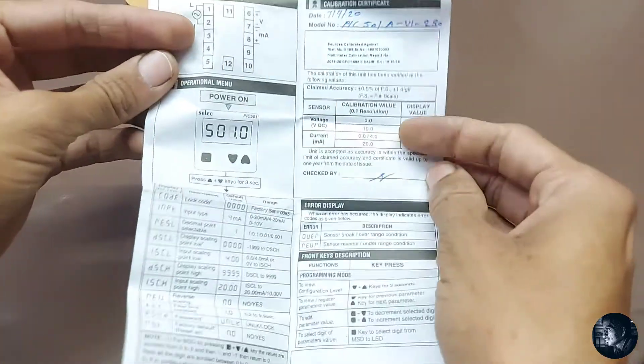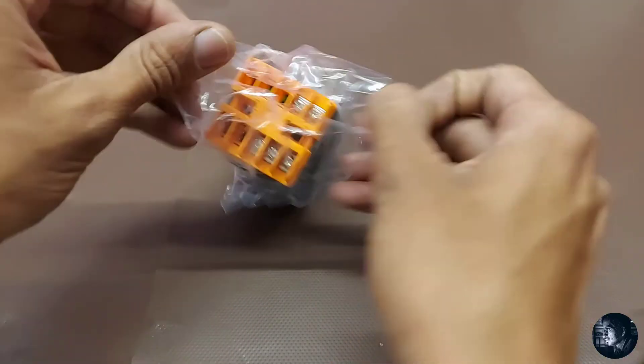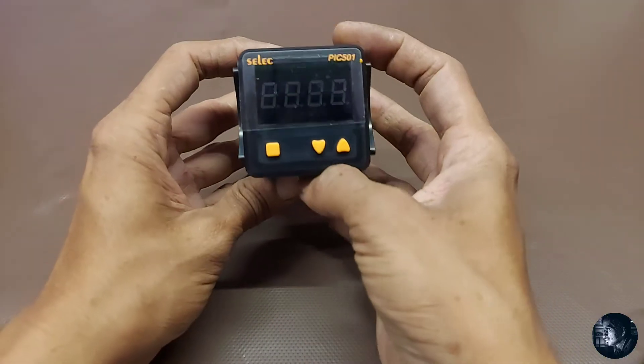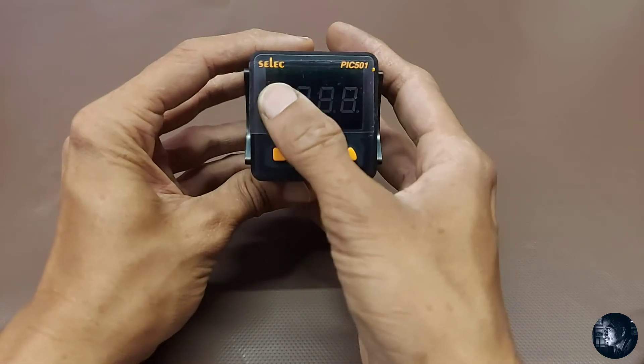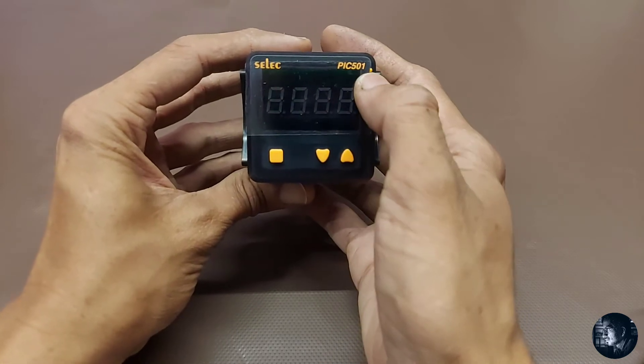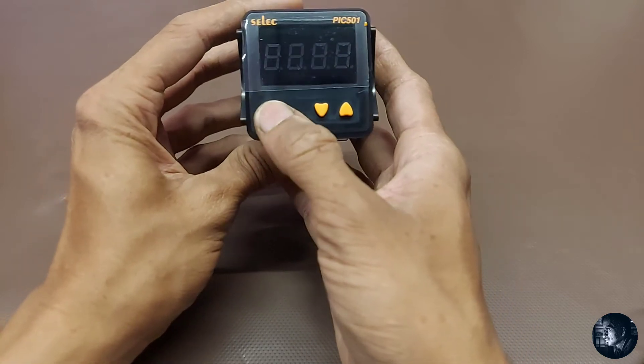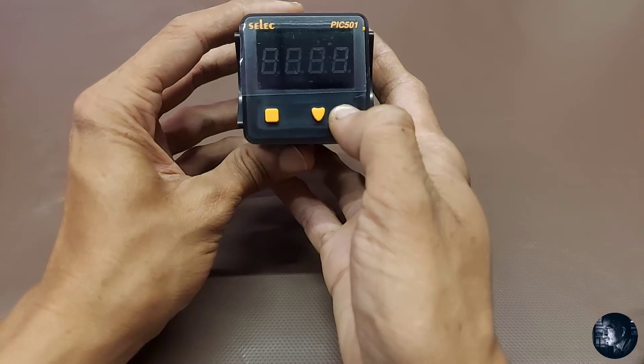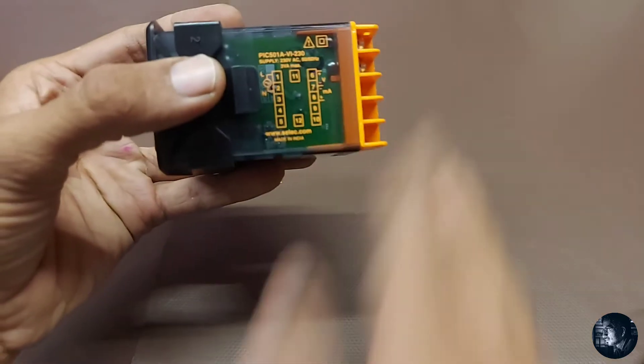Here's the user manual. This is the Selec brand, model PIC501, with a select button, up and down buttons, and control wiring.